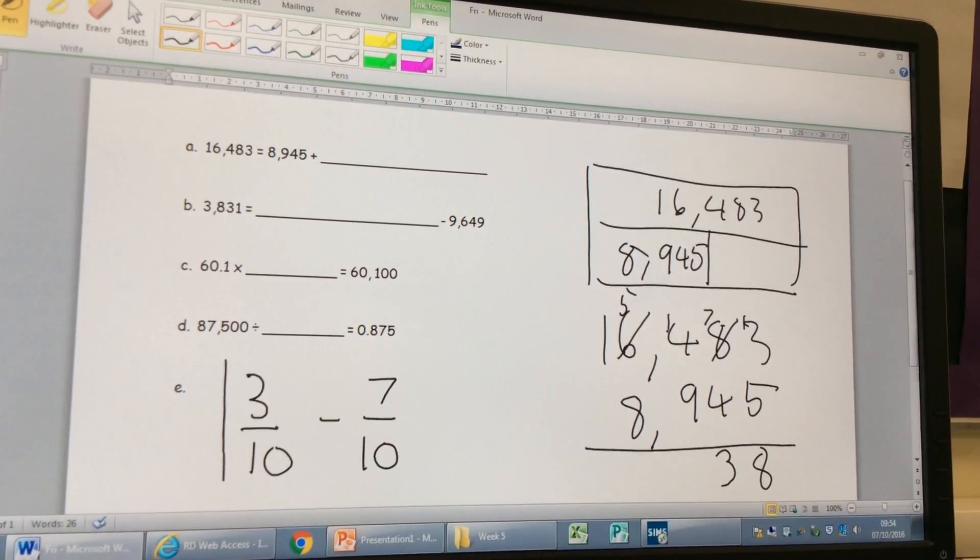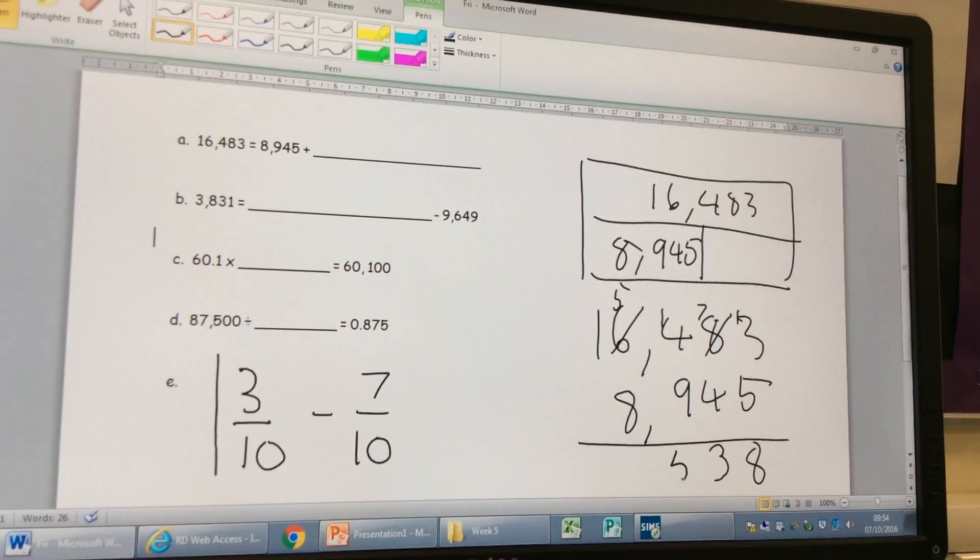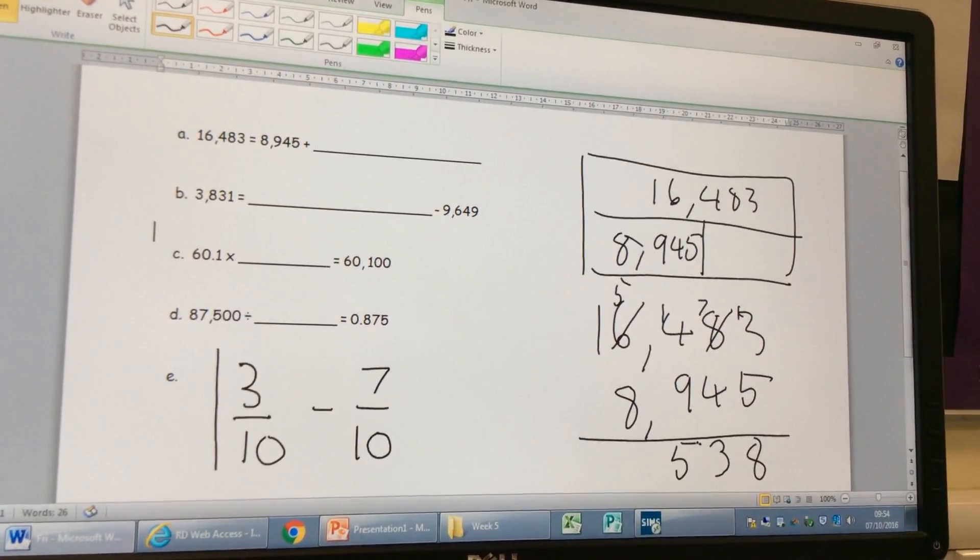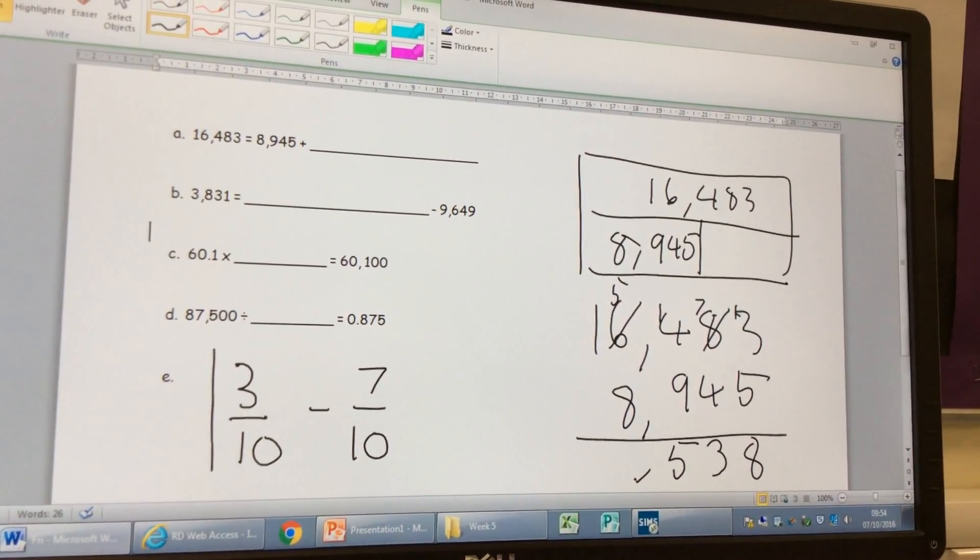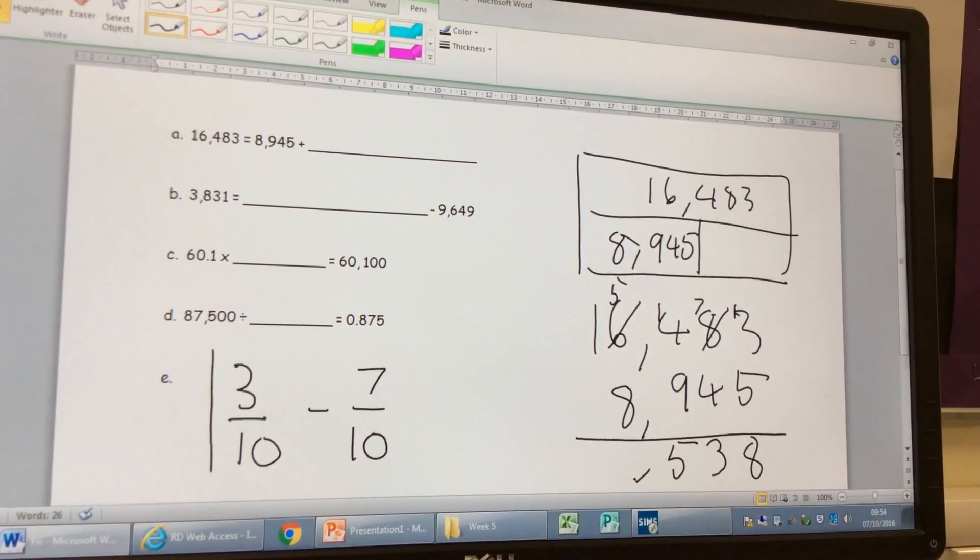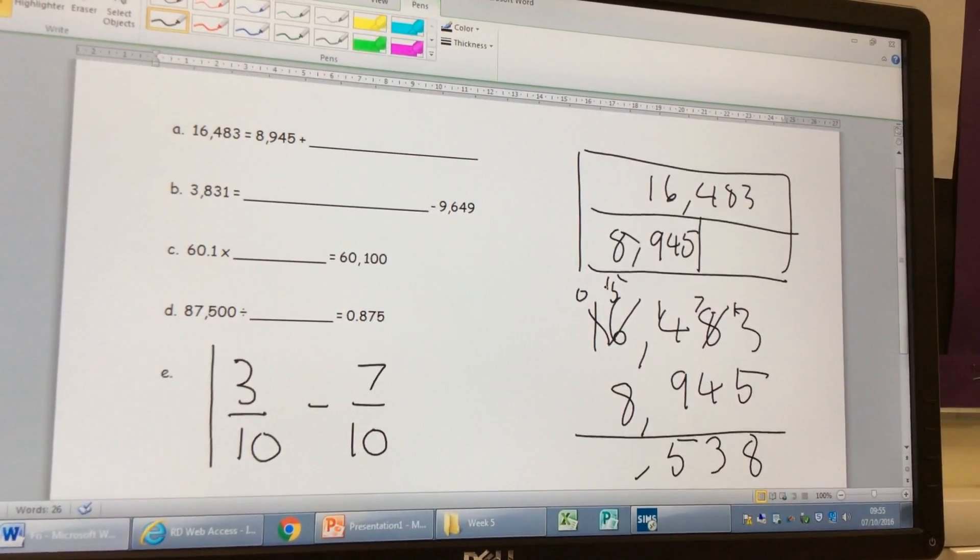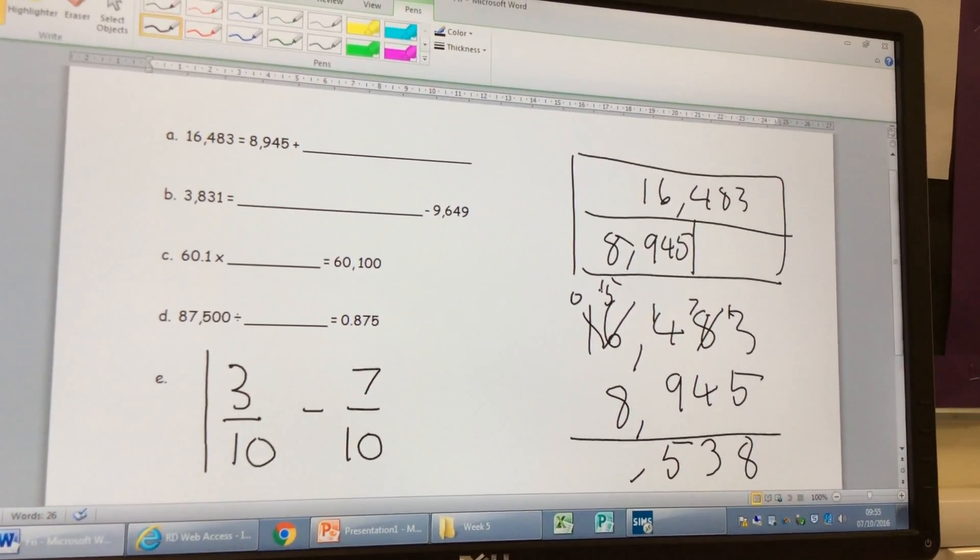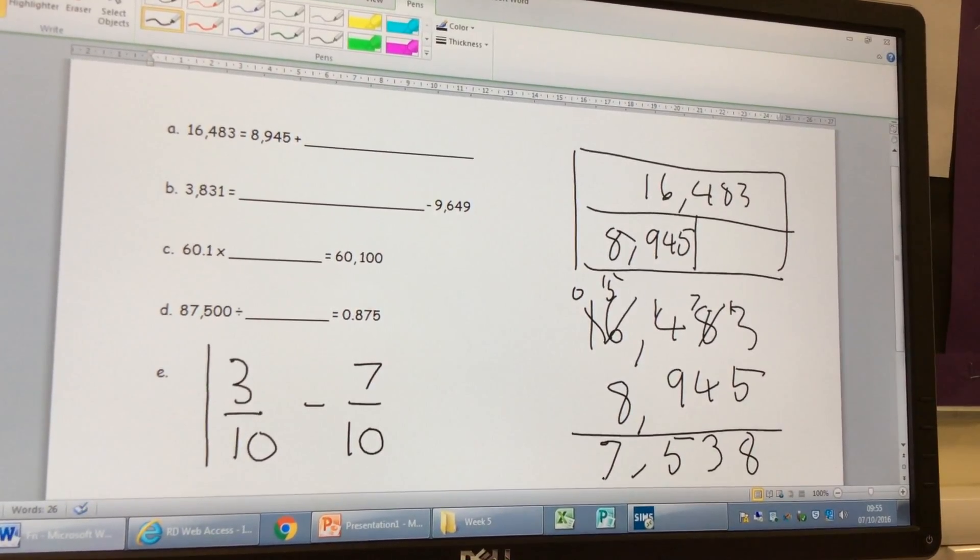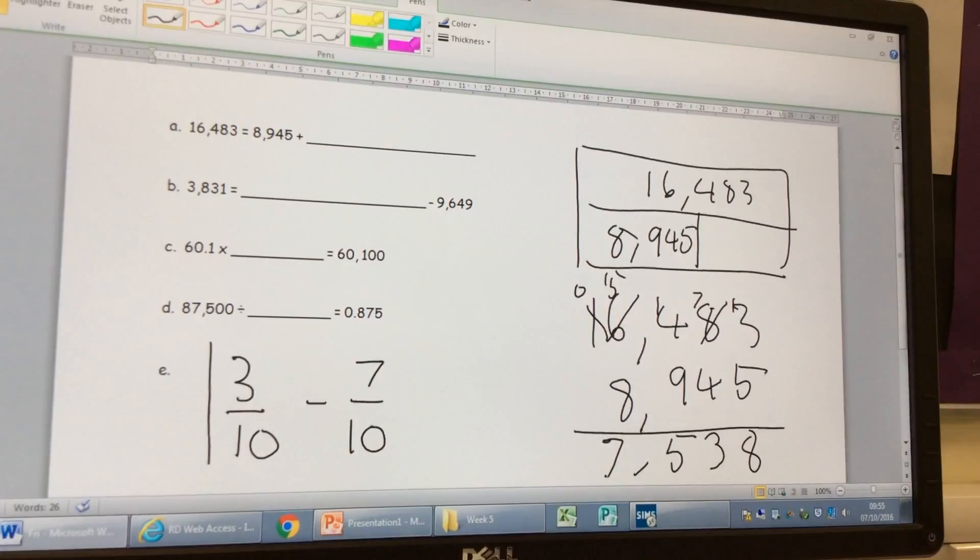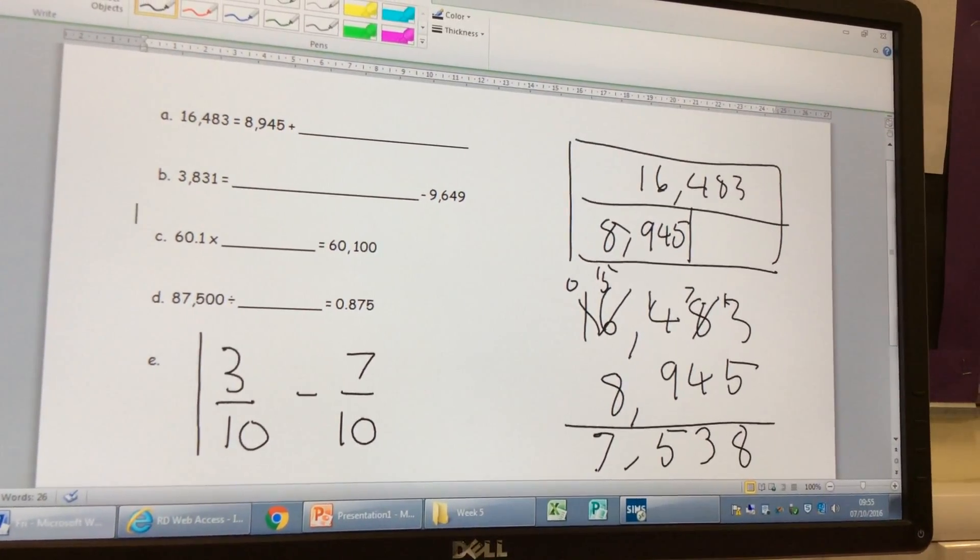5 what? 500. Yeah, good man. 5 take away 8, but we can't do it again, so we need to exchange from the 1 to make it a 0. 10,000 to make it 0, and then 15. And 15 take away 8 is 7, so that's 7,000, so the answer is 7,538. Hands up if you've got that right. Fantastic. Well done.